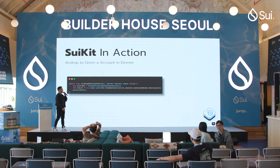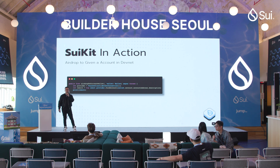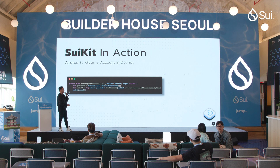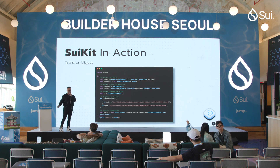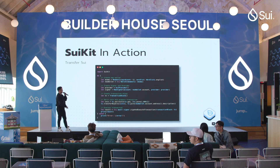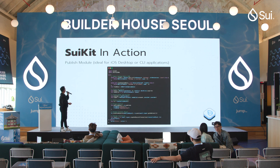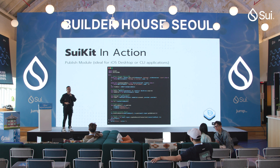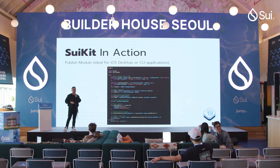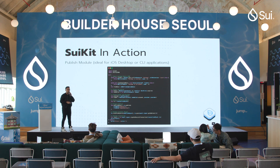You also get account management and the ability to interact with DevNet for doing airdrops. One example is a desktop faucet DevNet application that allows you to query the blockchain, get some tokens, and start playing with Sui. Things like transferring objects that can be done in the TypeScript SDK are now supported on Swift for iOS — it's almost a one-to-one representation. Merge coins, move calls, publish modules — publish modules is more ideal for a desktop application. If you're a developer using macOS, you can launch this desktop app to publish your modules directly without needing the CLI.